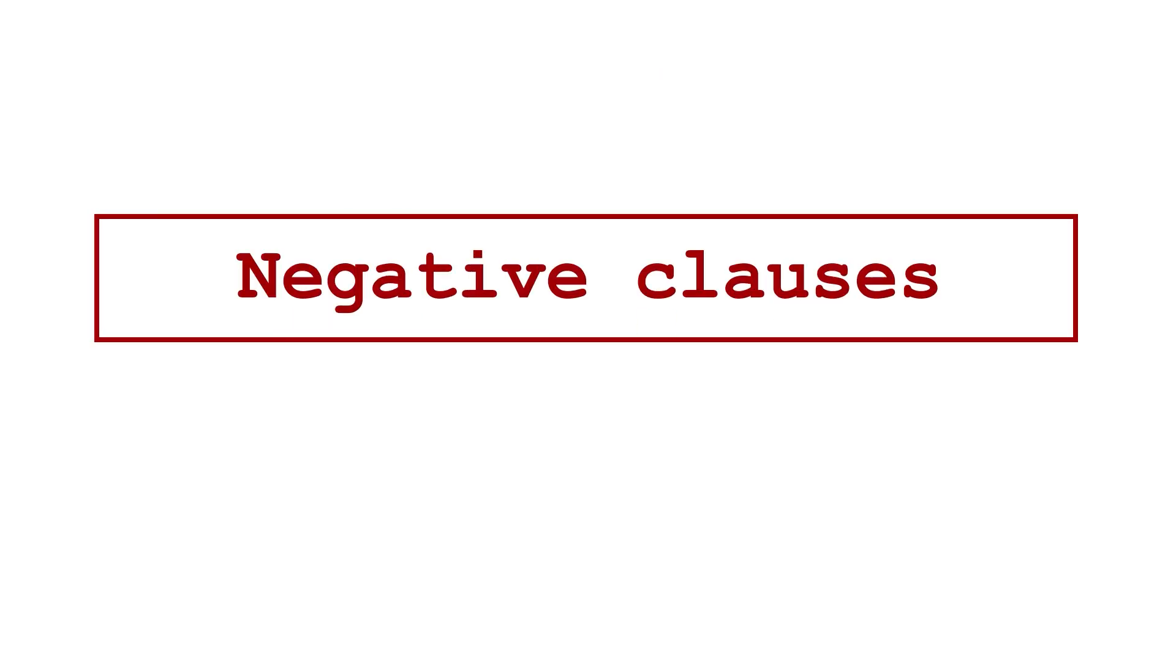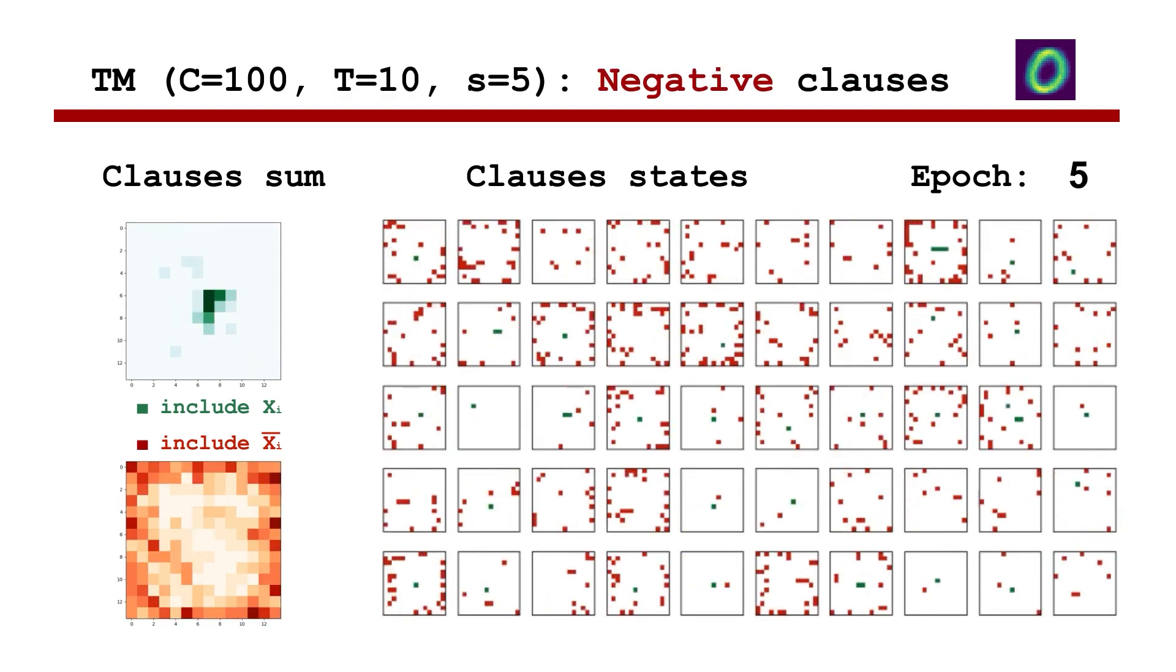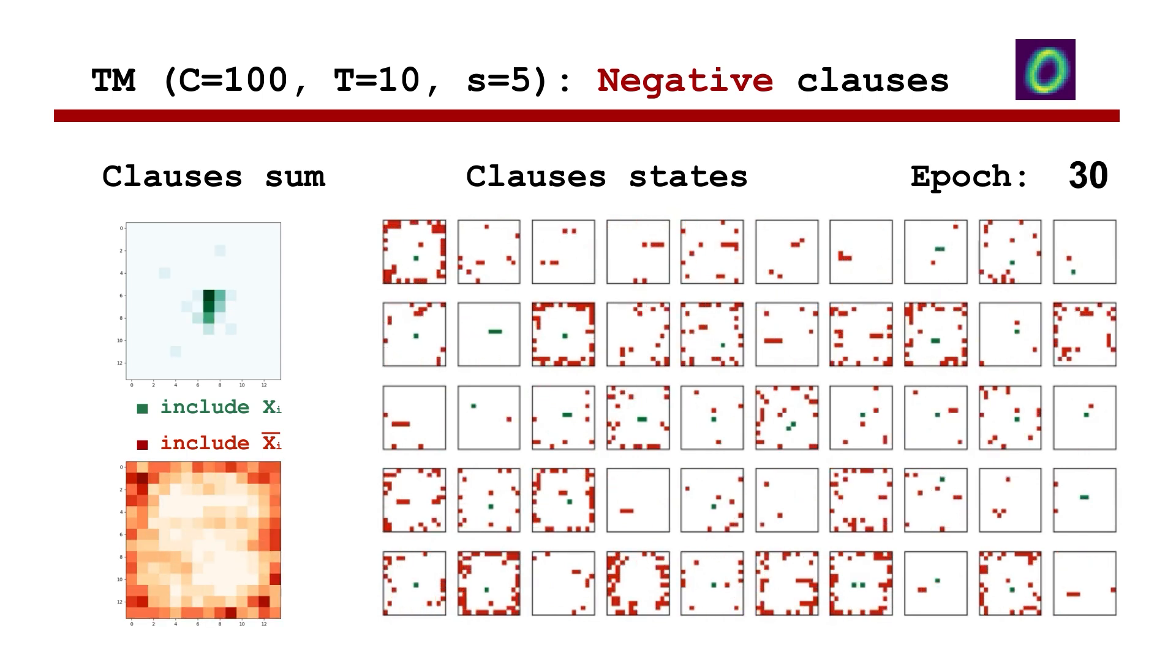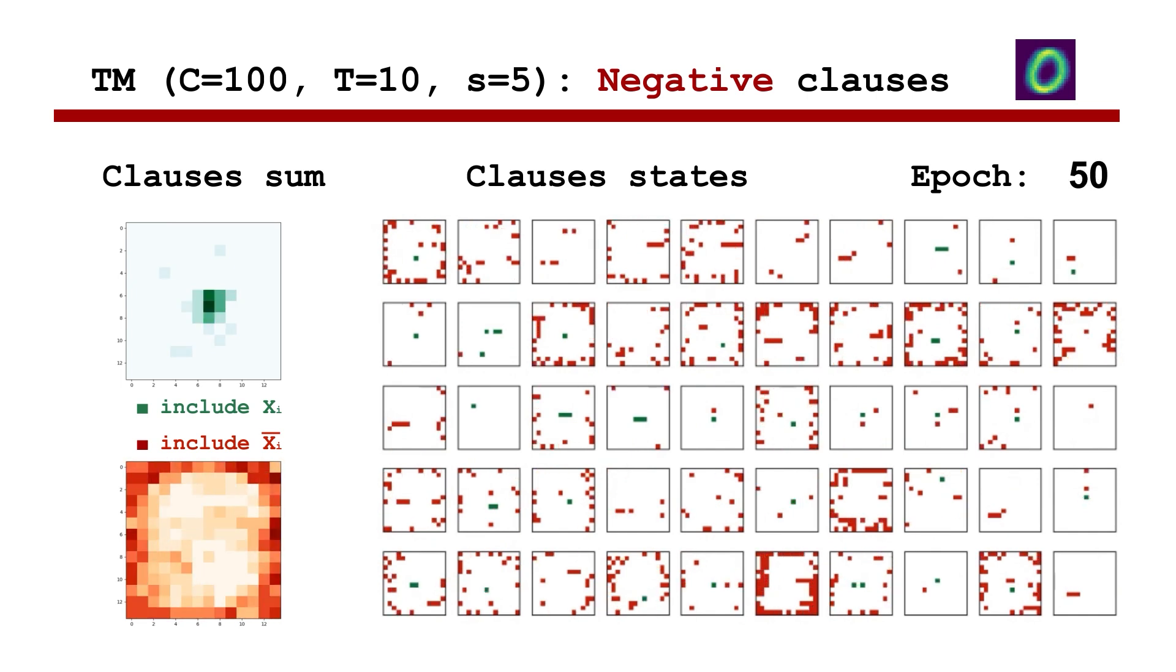Negative clauses learn features of counter classes and create patterns to recognize data samples which do not belong to the clause class. For example, if the data sample includes true features represented by green pixels in the middle of the image, then this is not class zero.